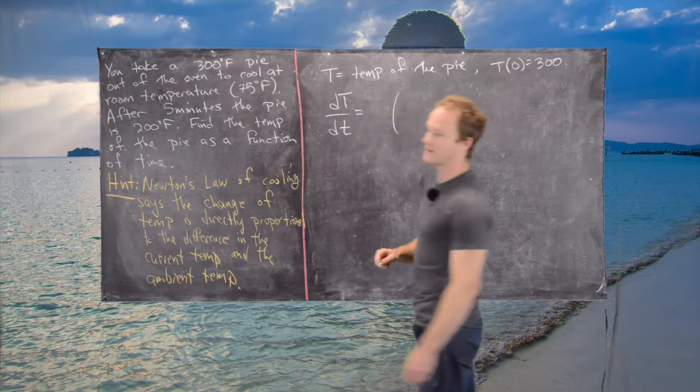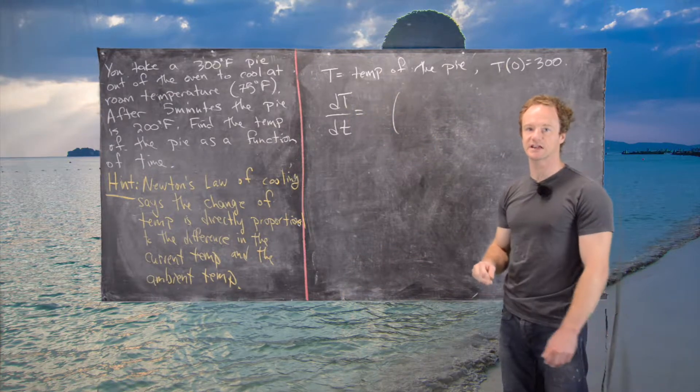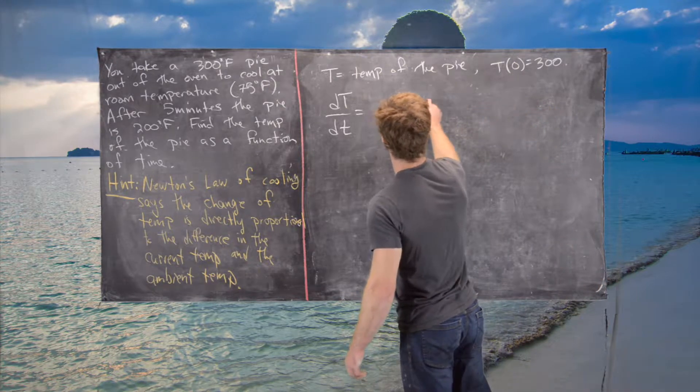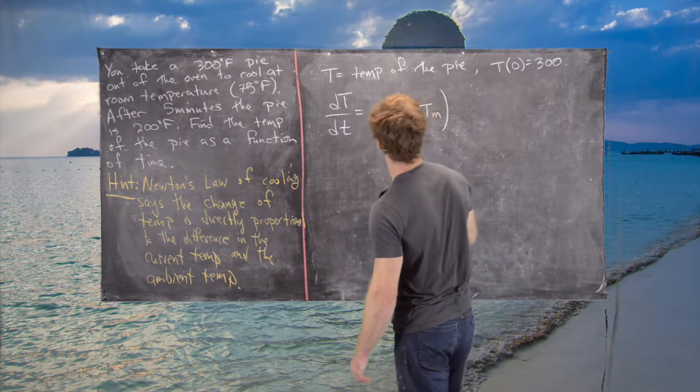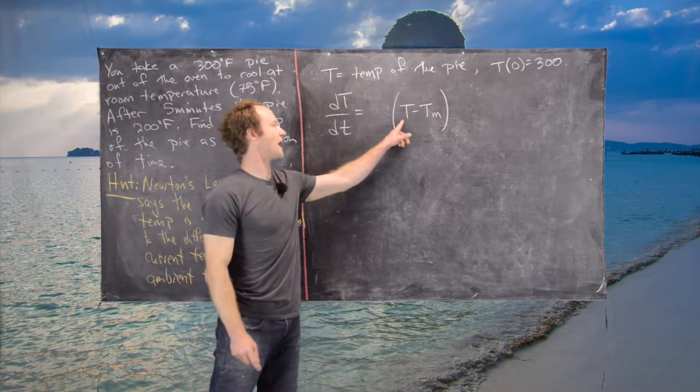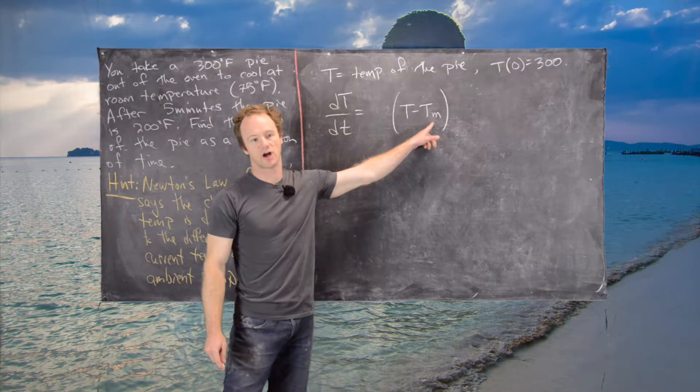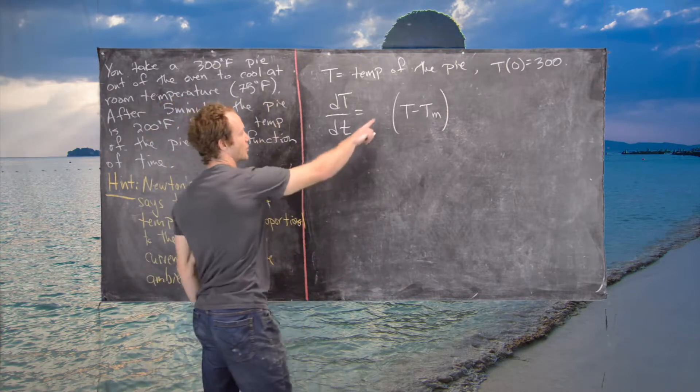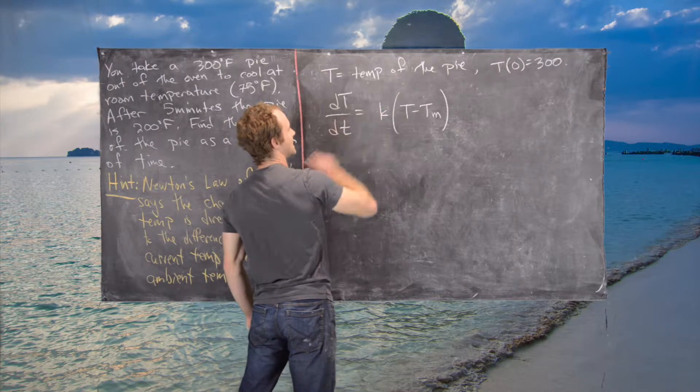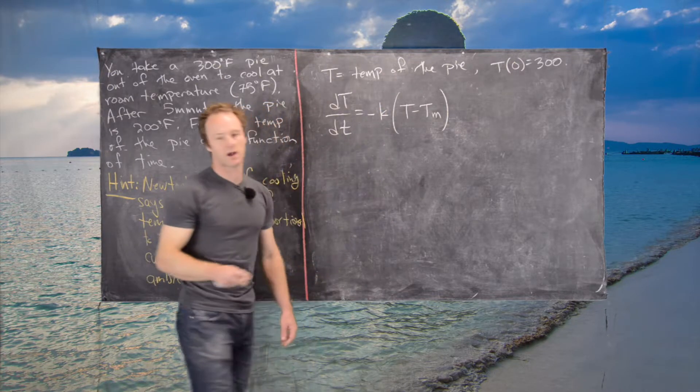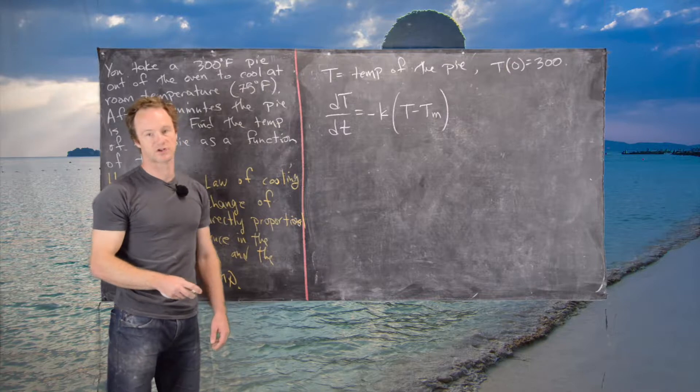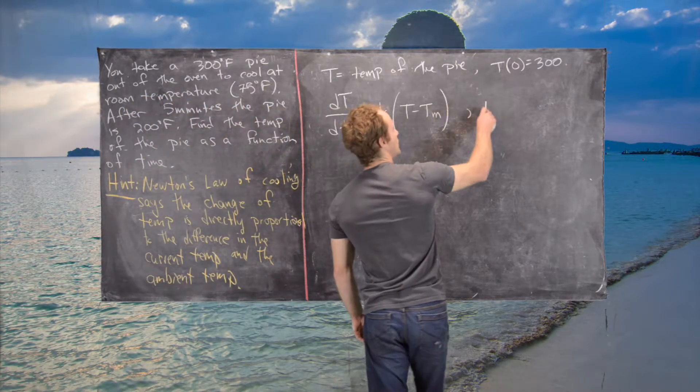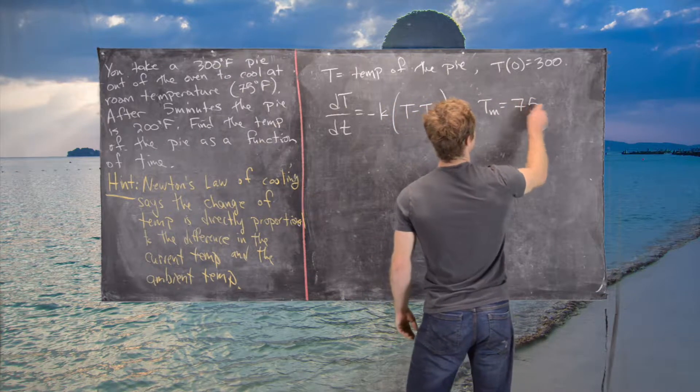I'm going to write this in notation you might see in a textbook. We have dT/dt = -K(T - TM), where TM is the temperature of the surrounding medium—the ambient temperature. We need a proportionality constant, and often negative K is used. For our setup, we know that TM = 75.